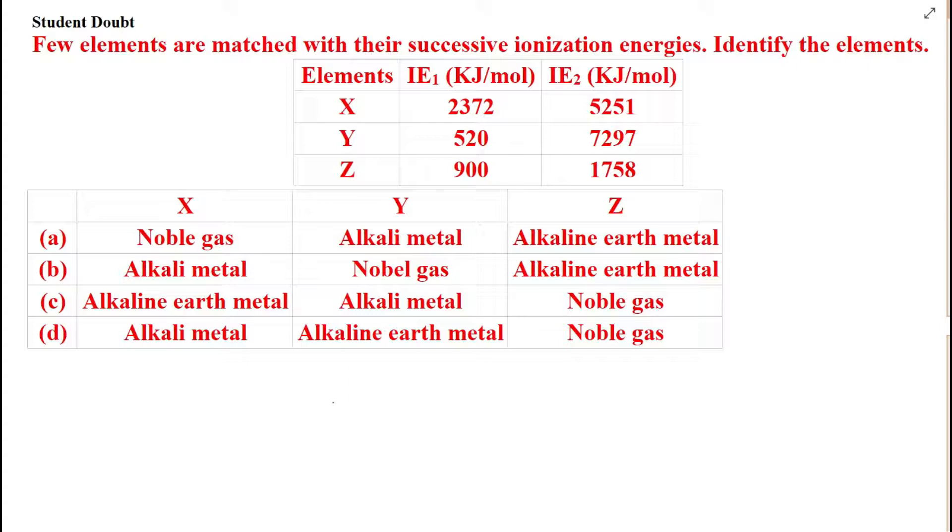These types of questions are normally solved by trial method. Now we are having three options: first noble gas, second alkali metal, and the third one is alkaline earth metal.